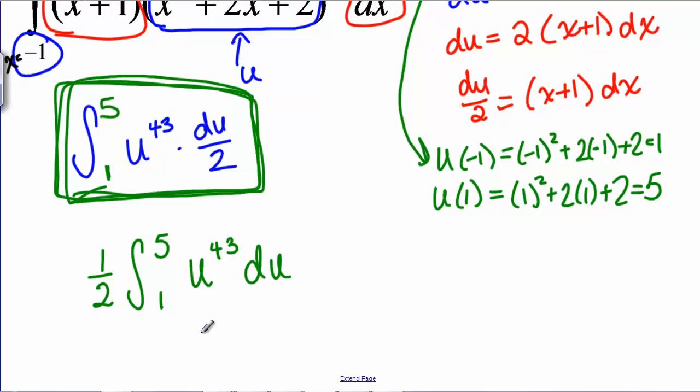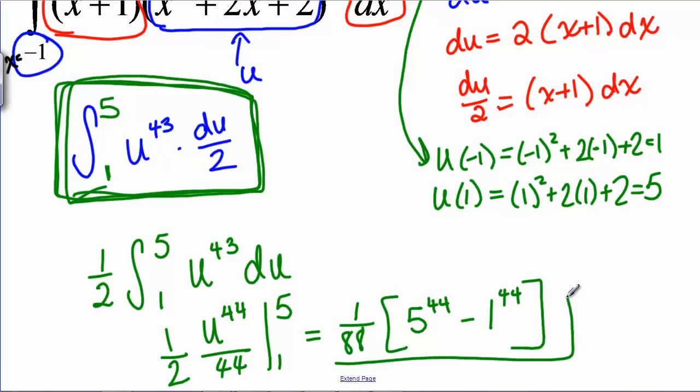This becomes U to the 44th over 44, evaluated from 1 to 5, and I still have a 1/2 out front. So using the second fundamental theorem of calculus, I get 1 over 88 times (5 to the 44th minus 1 to the 44th). And that's my answer. So I didn't have to go back to X's at all.